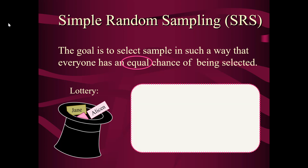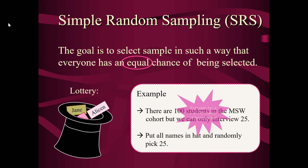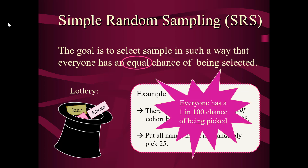Let's use a more specific example. Let's say there are 100 students in an MSW cohort, but we can only interview 25 to ask them about how they felt about the program. I would put all the names in a hat and randomly pick 25. In this case, everyone has a 1 in 100 chance of being picked.